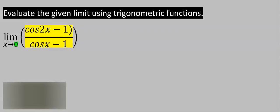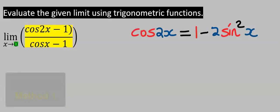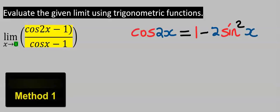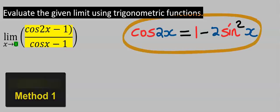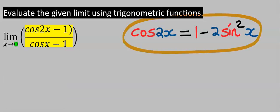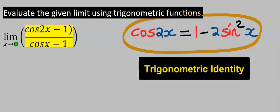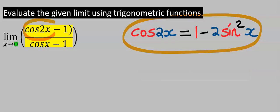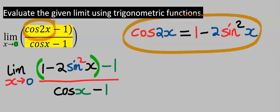Evaluate the given limit using trigonometric functions. To solve this problem, let's recap that cos2x is equal to 1 minus 2 sine squared x, and we're going to use this to replace cos2x. This is step number one.